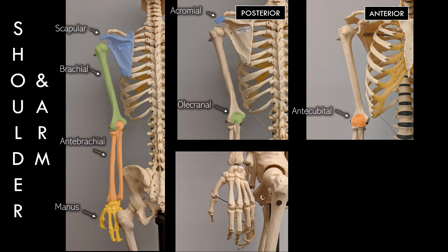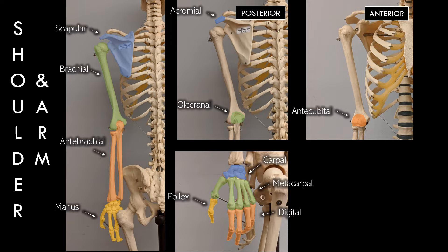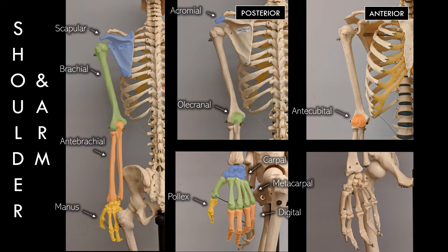Moving on to the hand: the wrist bones are the carpals, and the bones of the hand are the metacarpals. The fingers are the digital region, but the thumb gets its own name — the thumb is the pollux. The anterior side of the hand is the palmar region.